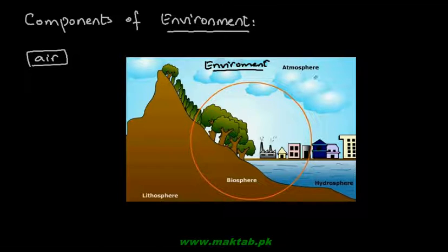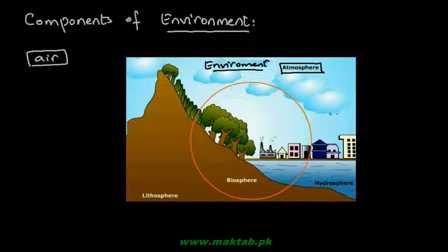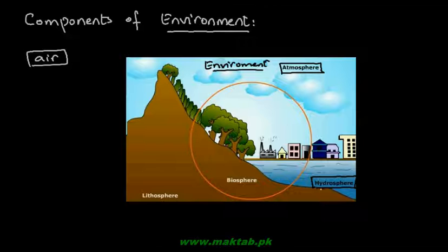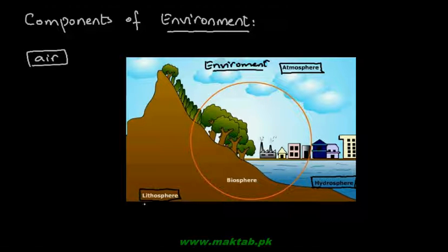Environment is made up of four basic components. The first component is the atmosphere, which is composed of all the gases around us - جتنی بھی gases ہیں جو اوپر آسمان، it is basically the atmosphere. Besides that we have the hydrosphere - 'hydra' سے word نکلا ہے which refers to water. All the water reservoirs around living beings in the world, we call it the hydrosphere.